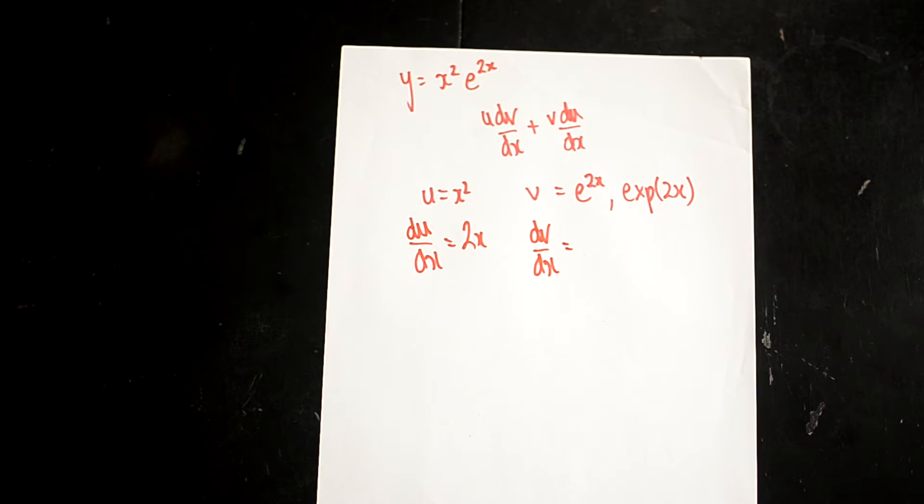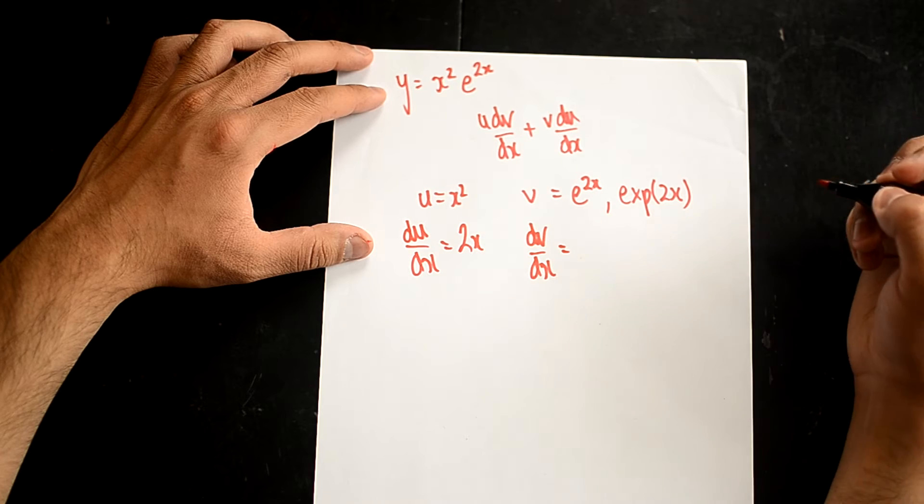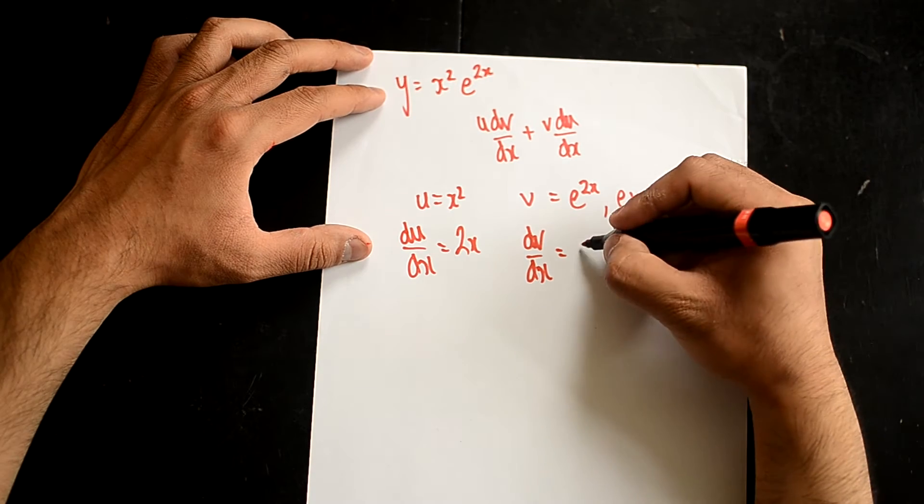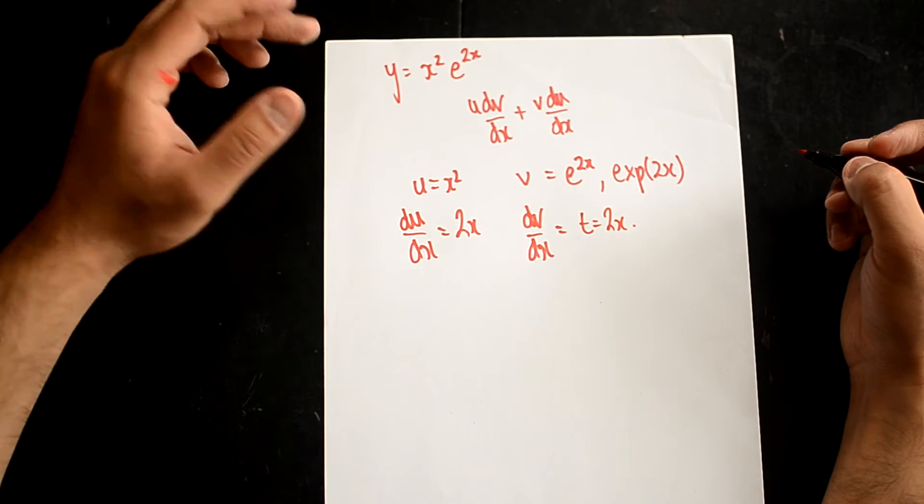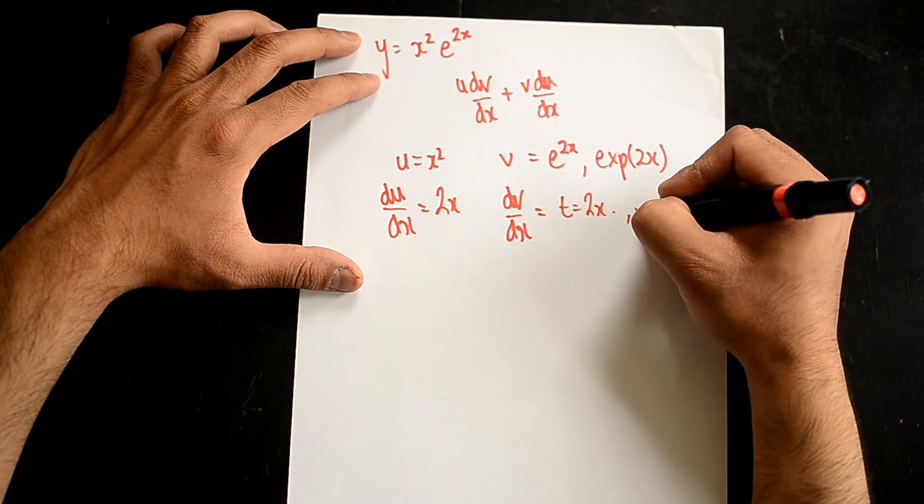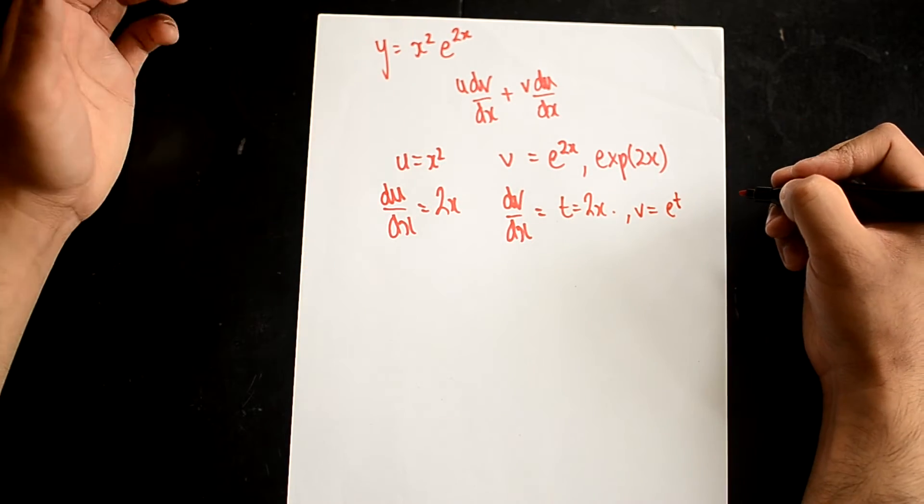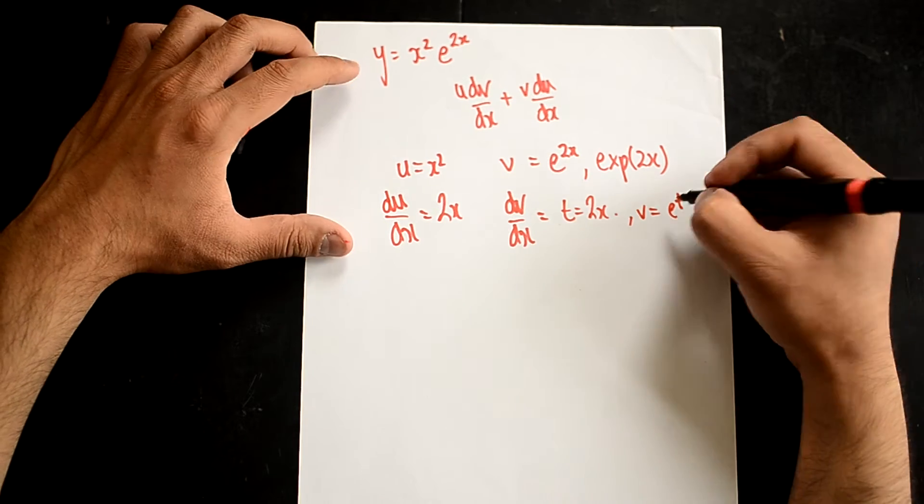So, now here we're going to use the chain rule. Very similar to doing trigonometric differentiation. And I'm going to let t equal 2x. So, now when t equals 2x, that means v will equal e to the t, so e to the power of t.